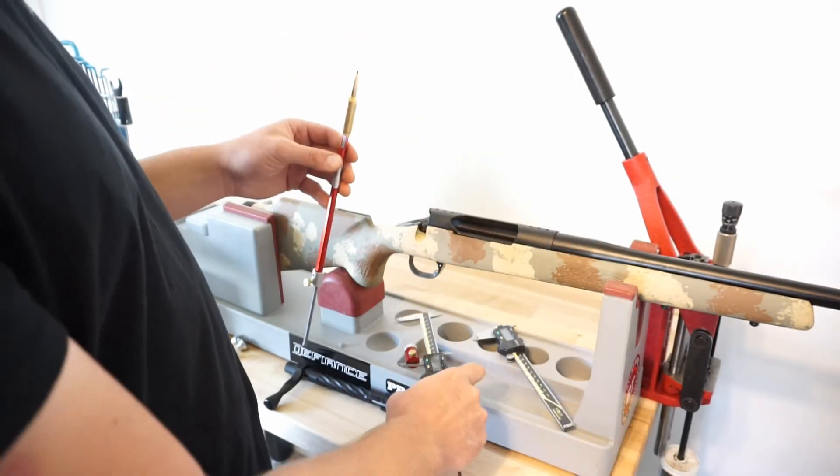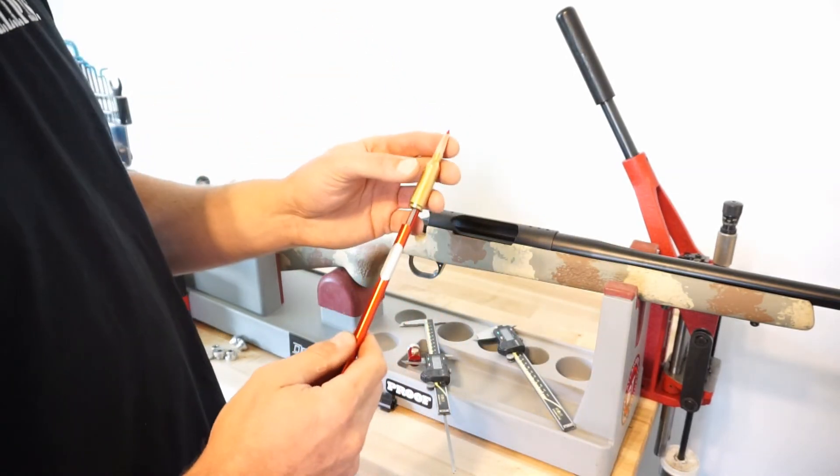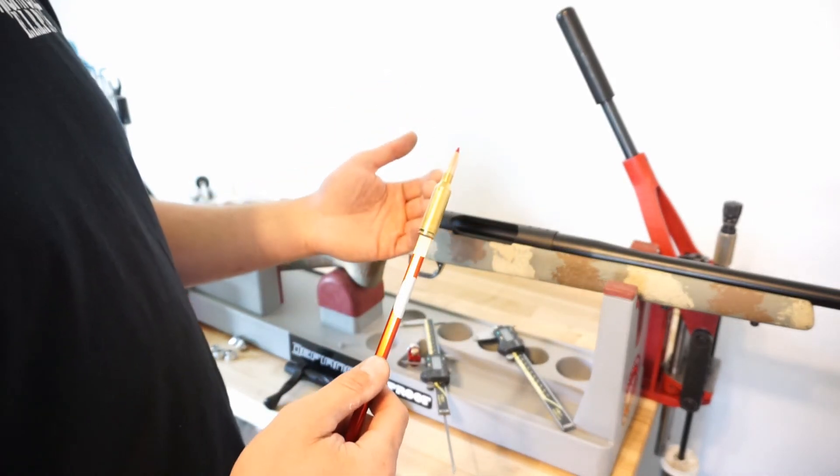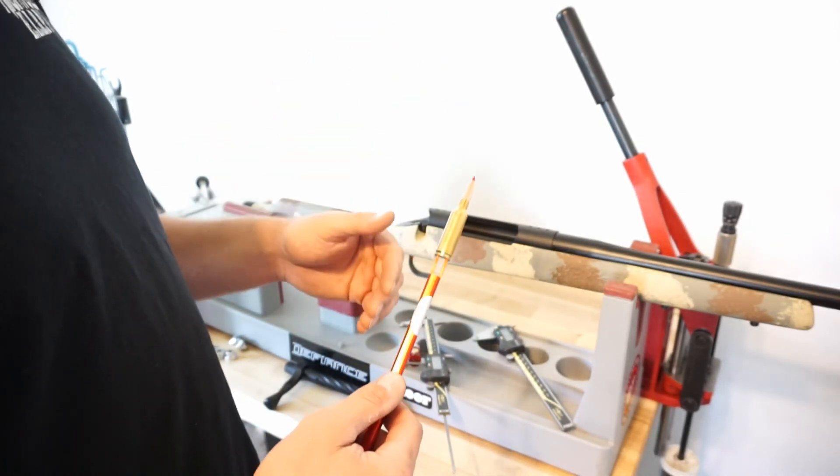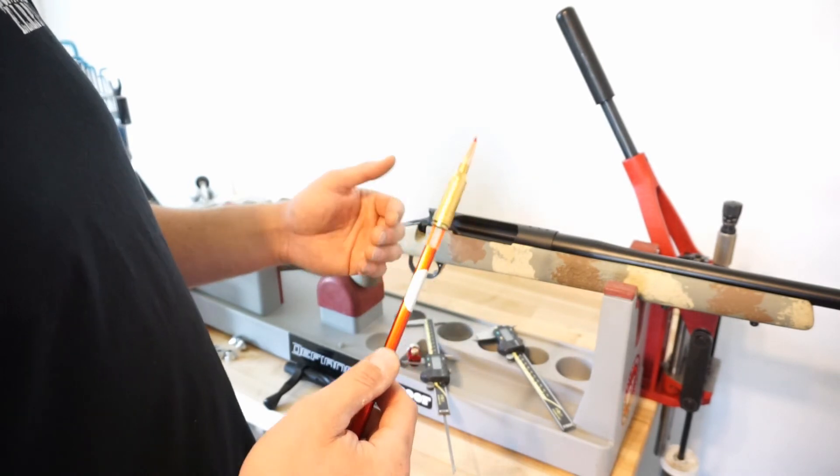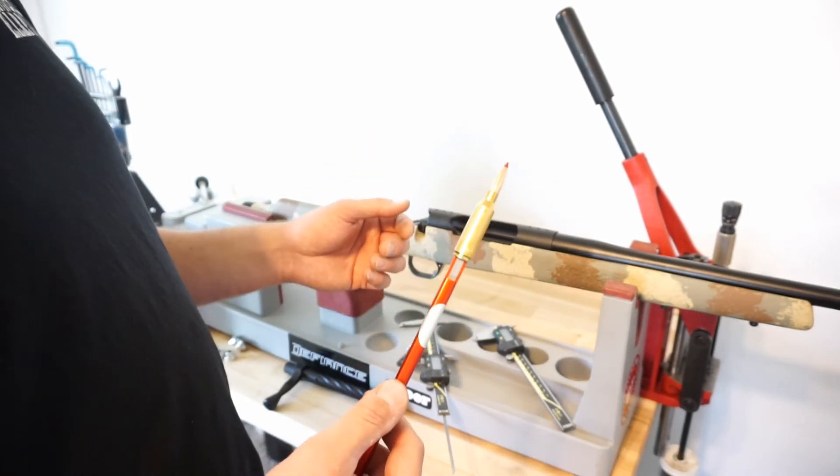So we can get the proper jump on our bullet. So that's our baseline to the lands figure that we're going to do. I'm going to pull 40 thousandths off of that measurement. And that's where we're going to start our load development on this cartridge.